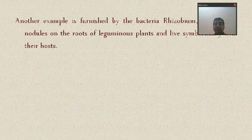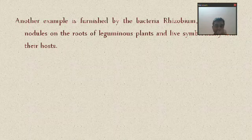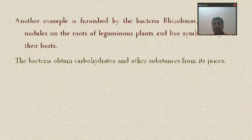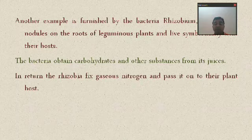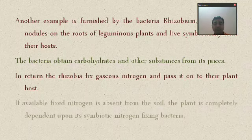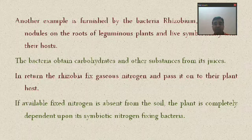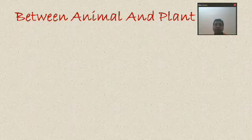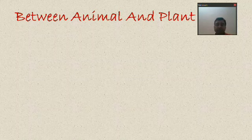Another example is Rhizobium bacteria and the root nodules of legume plants. The bacteria get nutrients in the form of carbohydrates from the plant juices, and in return they fix atmospheric nitrogen for the host plant. Both get benefits. As we know, nitrogen is an important limiting factor for the growth and development of plants, so both are equally benefited.